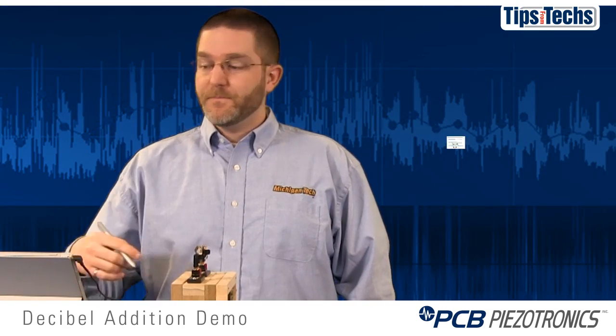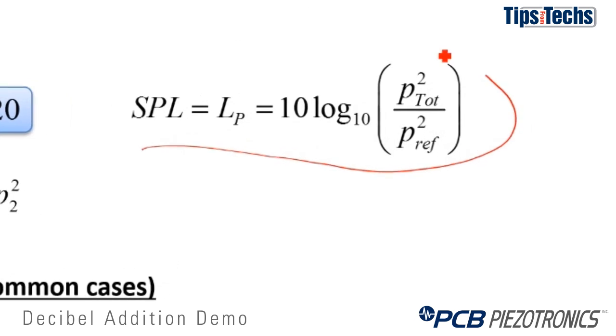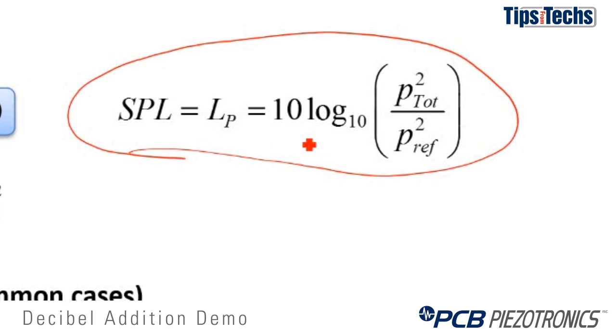So let's take a look at the theory. The equation for converting a sound pressure to a sound pressure level is shown here. We take 10 times the base 10 logarithm of the total pressure squared divided by the reference pressure squared.